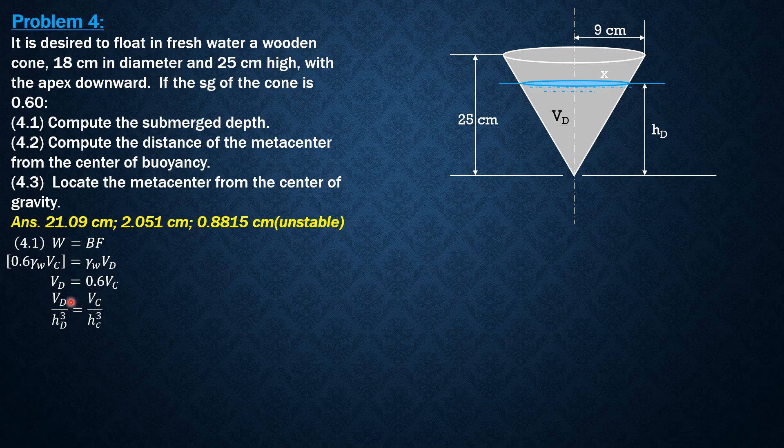From principles in solid geometry for similar solids, submerged depth cubed equals volume of cone as to height of cone cubed. So substituting VD, 0.6 of V sub C over HD cubed equals V sub C over 25 cubed. Cancelling out V sub C, HD is 25 times cube root of 0.6. So HD is 21.09 cm.